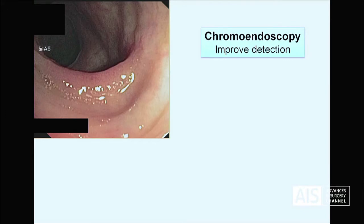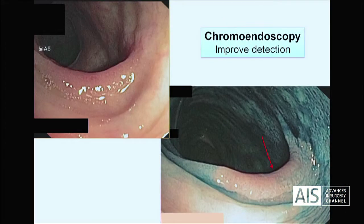Here we have another example. You can see in this haustrum that there is a little reddish area, and when we apply chromoendoscopy with indigo carmine we can see that there is a lateral spreading tumor — a polyp which in this case is benign. But if we didn't use chromoendoscopy, we probably would have missed this lesion and the patient could have had an interval cancer.